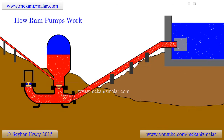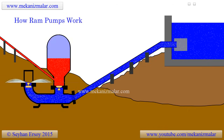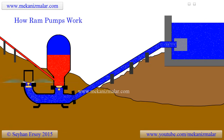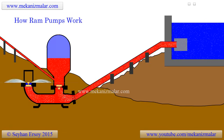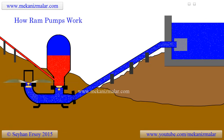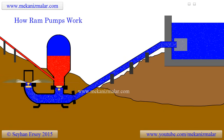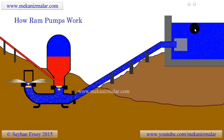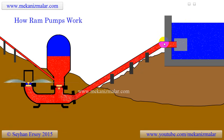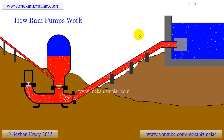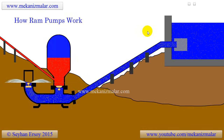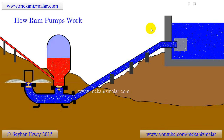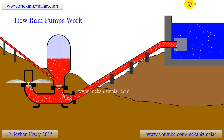The simulation shown here shows how ram pumps work, but how it works and why it seems to discard so much water needs explanation. Ram pumps use the potential energy of flowing water to pump the water to a higher elevation. To understand this concept, let's look at the following drawing.